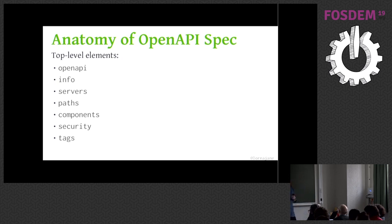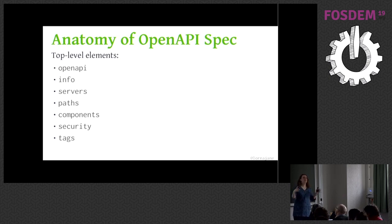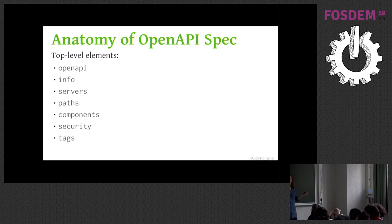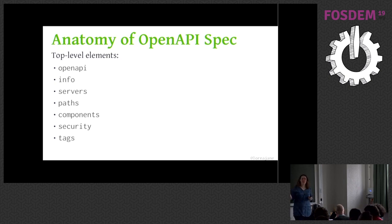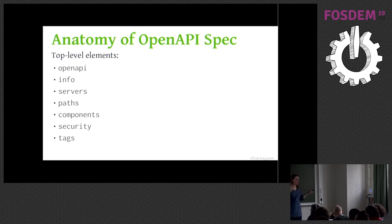The security section describes which security scheme to use — that's in the components section. You can also use tags: tags are free-form labels that allow you to group similar endpoints together. Some documentation renderers will then show them in sections. If you have a large API that covers quite a lot of endpoints, tags can be really, really useful. It's quite free-form — you can attach multiple tags to an entry in the paths. So it's a good way of saying, well, this is to do with users, this is to do with users and account, this one is to do with payments.